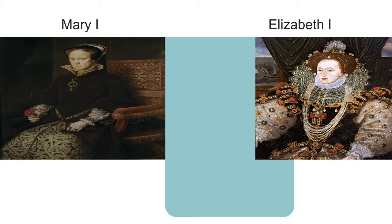When Edward VI died aged 16 in 1553, he was succeeded by his Catholic sister, Mary Tudor. Mary was Henry VIII's daughter by Catherine of Aragon. Mary I, the first English queen to rule in her own right, was a devout Catholic. Trying to restore England to the old religion, she sanctioned the burning of Protestants, earning the nickname Bloody Mary.